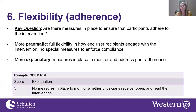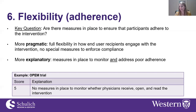The sixth domain is flexibility of adherence. The key question is: are there measures in place to ensure participants adhere to the intervention? In a pragmatic trial, there is full flexibility in how end users engage with the intervention with no special measures to enforce compliance. A more explanatory approach would monitor and address compliance — for example, having providers check if patients took medications as prescribed, and removing non-compliant participants. In the OPEN trial, there were no measures to monitor whether physicians received, opened, or read the intervention, scoring a five.